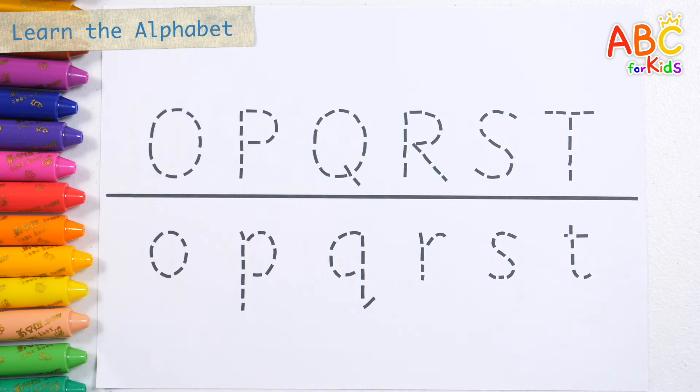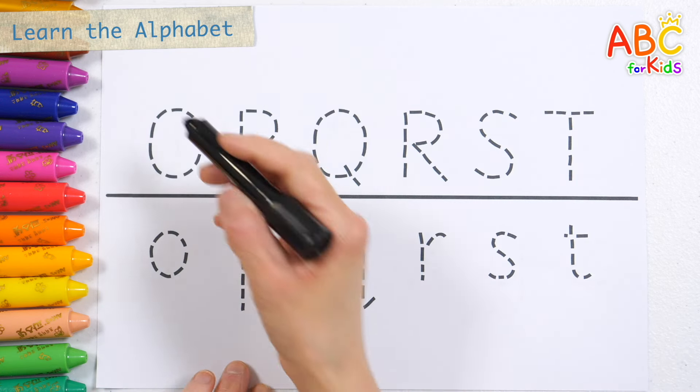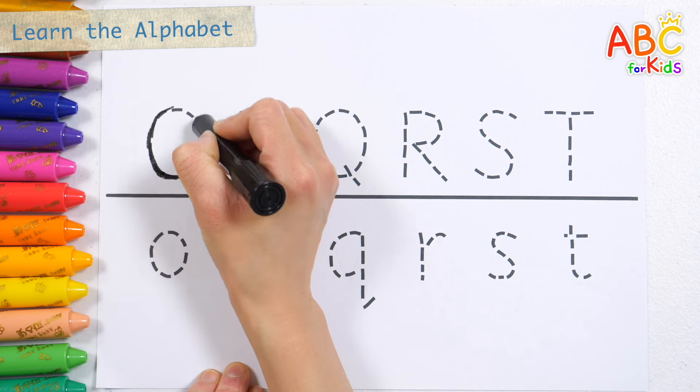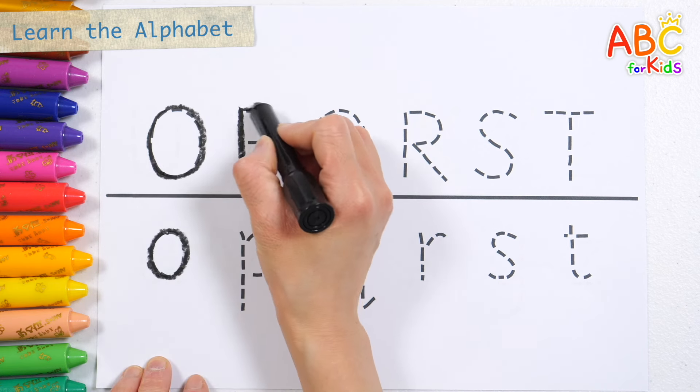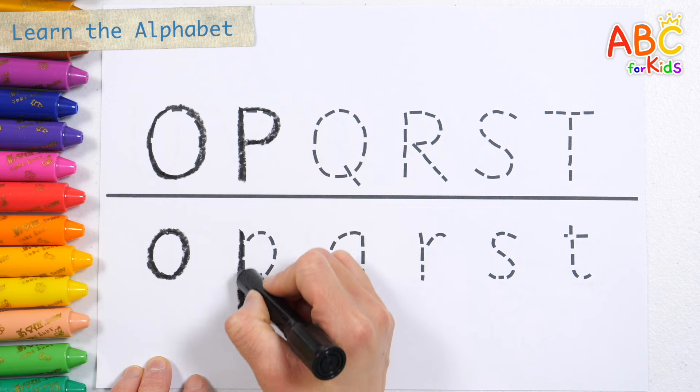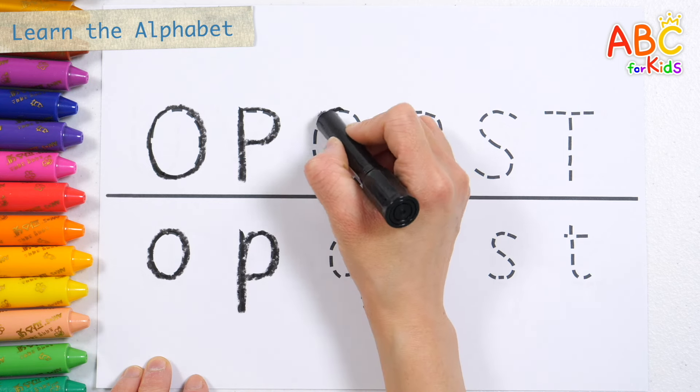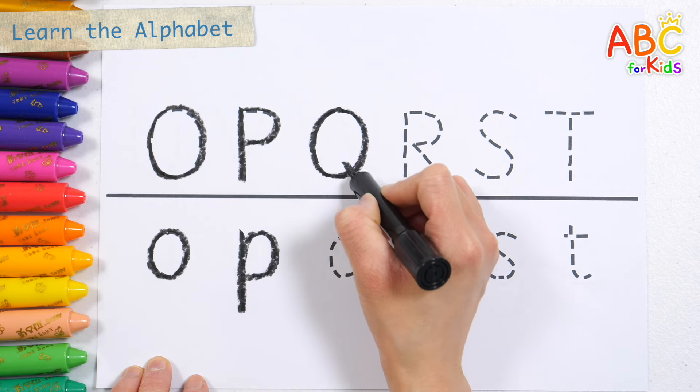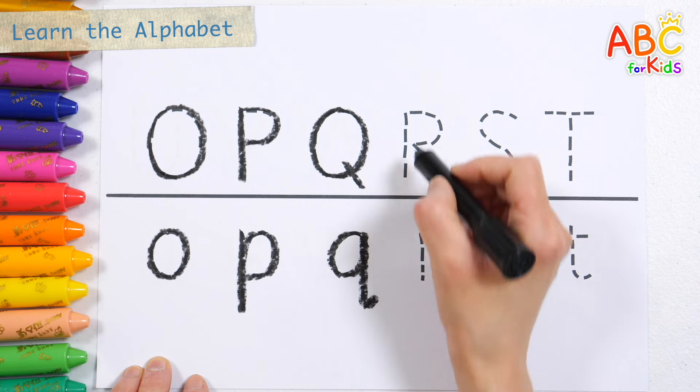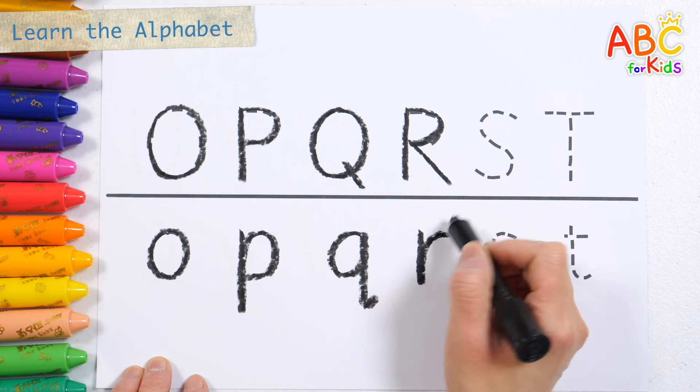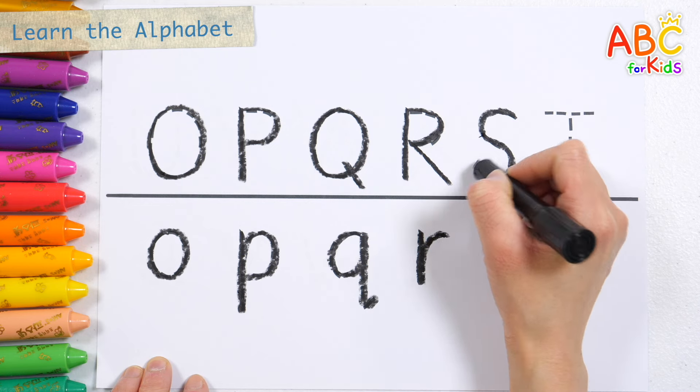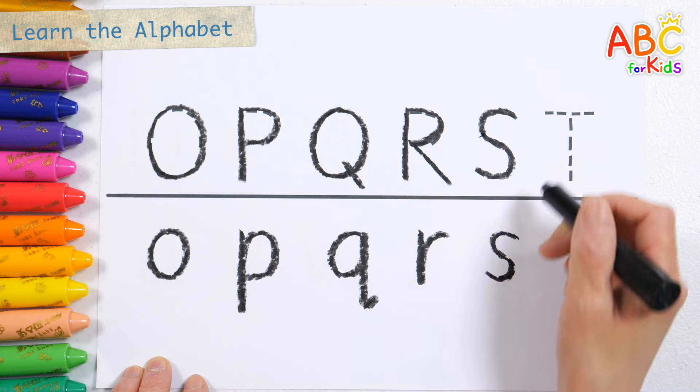Let's write the letters in black. Uppercase O, lowercase O, O, P, Q, R, S.